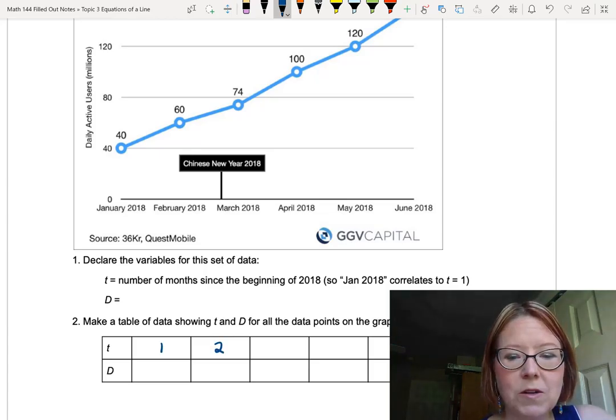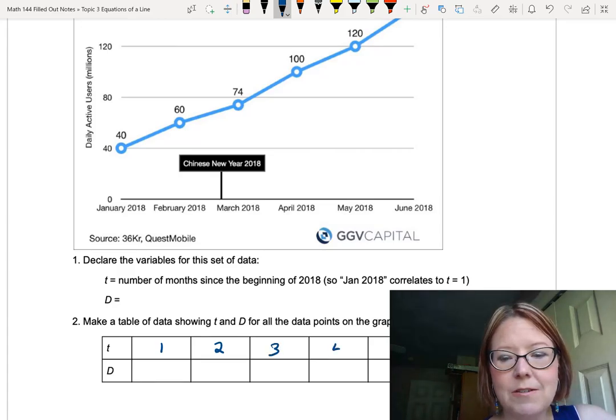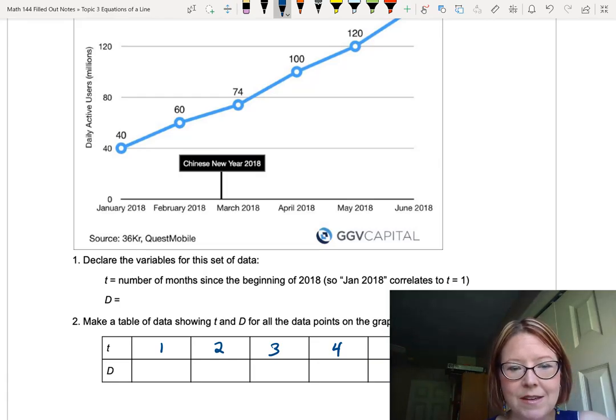So we'll have t equals one, two, three, four, five, and six for our six points. d is going to be the daily active users in millions of TikTok.